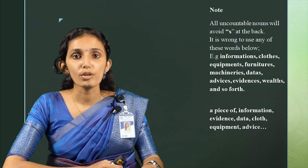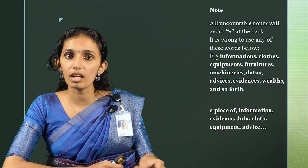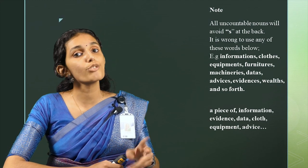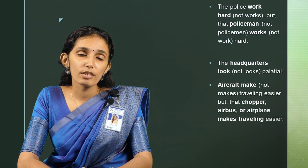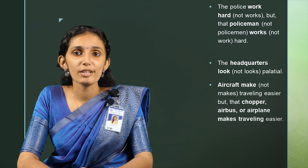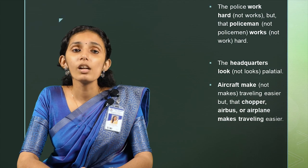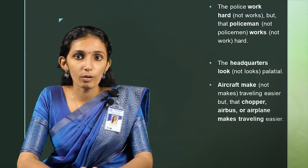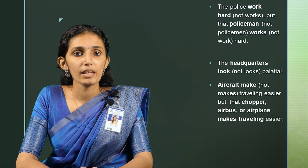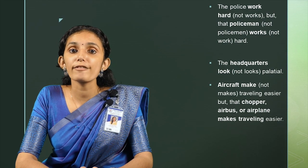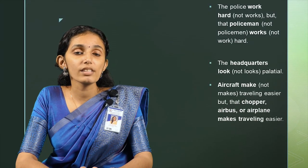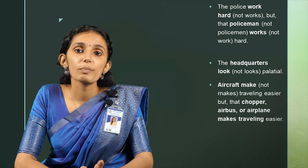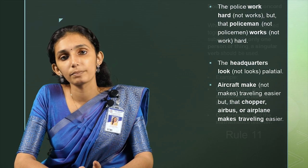Instead, say 'a piece of information,' evidence, data, clothes, equipment, etc. It is also wrong to say 'machineries'; instead say 'a machine' or 'two machines.' Other examples of nouns that attract plural verbs: 'The police work hard' but 'that policeman works hard.' Police is a collective noun attracting a plural verb, but policeman is singular, hence a singular verb. 'The headquarters look palatial.' Aircraft make travelling easier, but that airbus or airplane makes travelling easier.